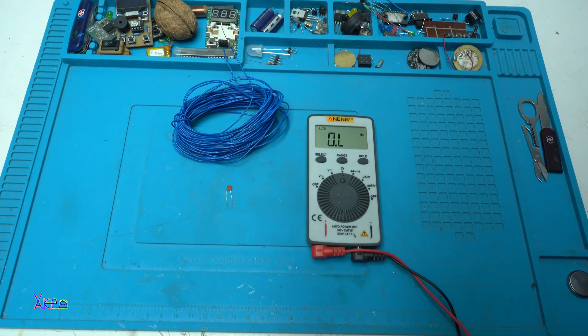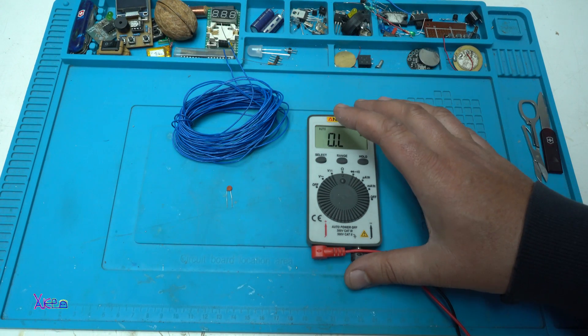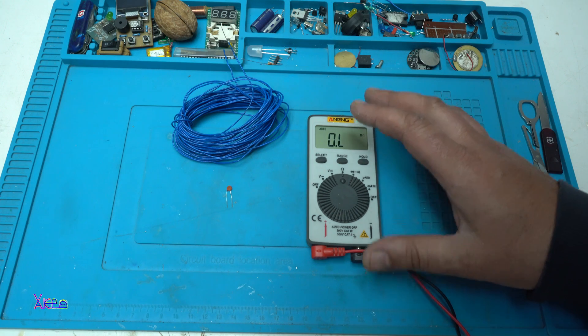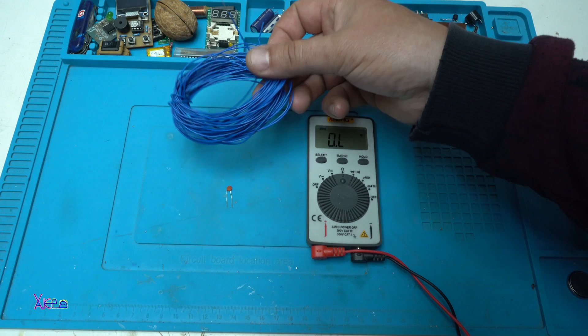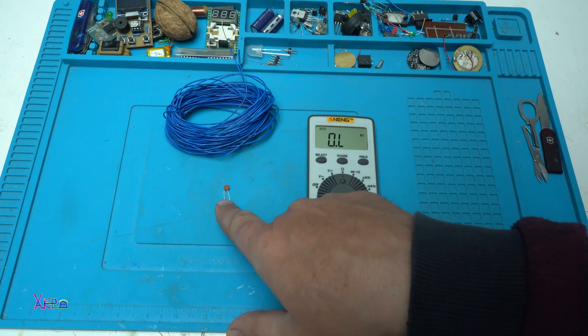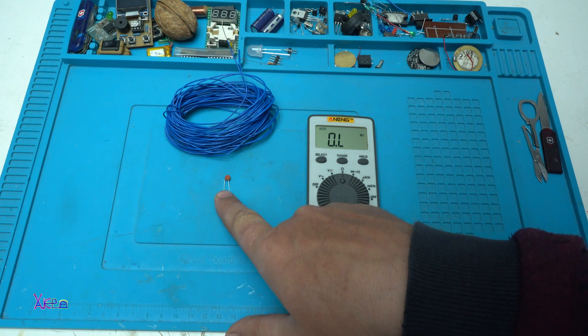This is the simplest way of making a metal detector using only three components. The first component is solid wire, one electronic component called capacitor 20 or 22 picofarads,